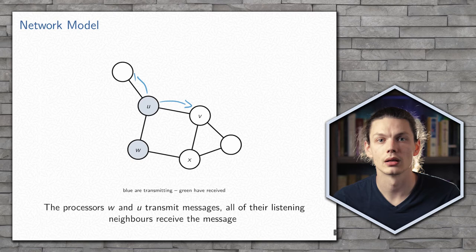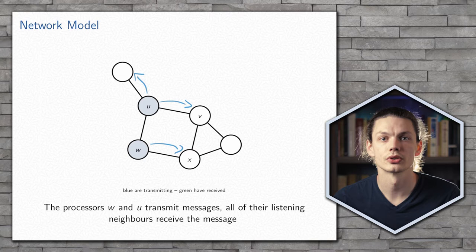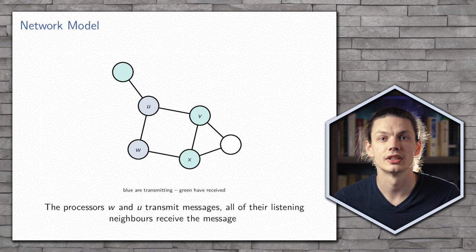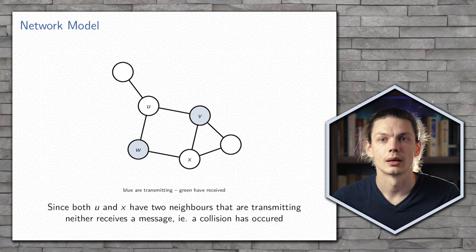In the next example, we have two processors, U and W, that are transmitting. So all of their non-transmitting neighbors will receive the message. However, no information crosses the edge between U and W, since neither is listening for the other's transmission.